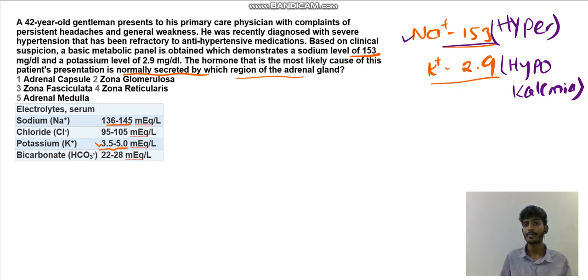The substance that will cause the hypernatremia and hypokalemia would be aldosterone. What aldosterone does is very simple - it increases the potassium excretion.